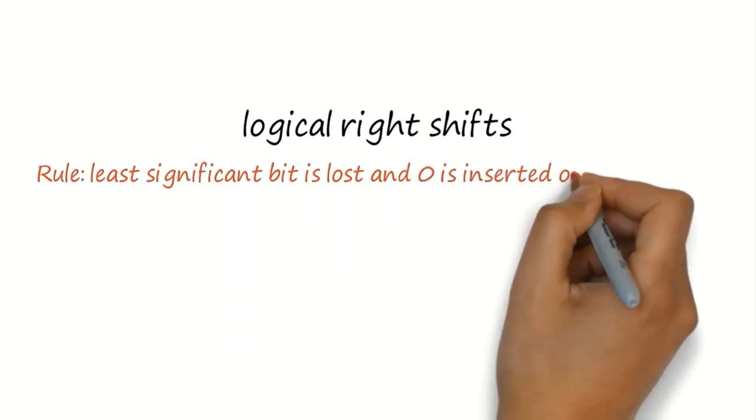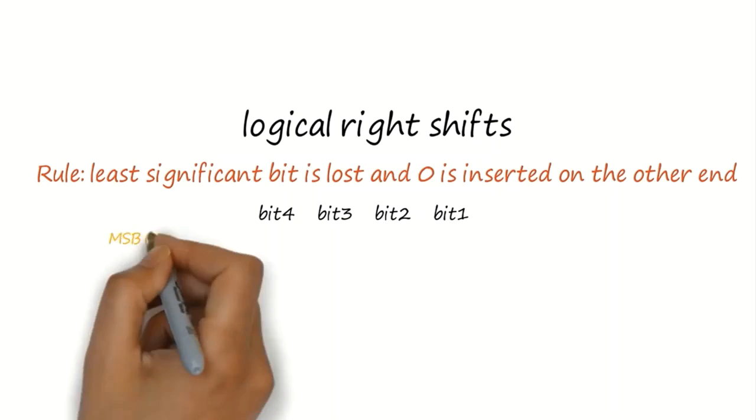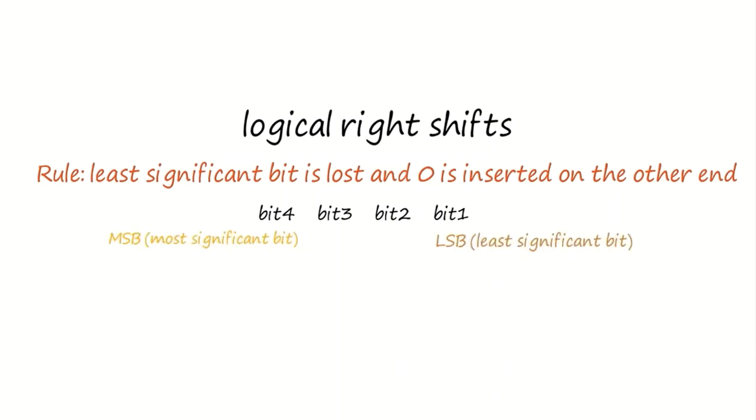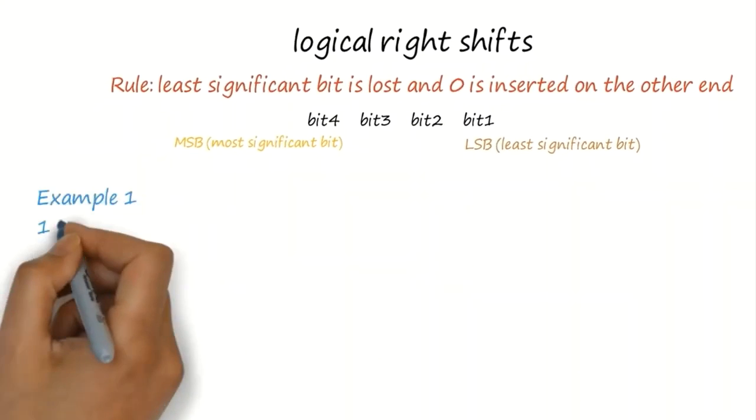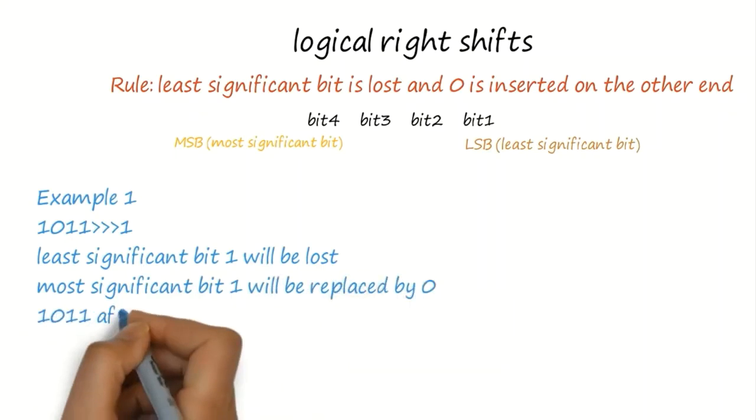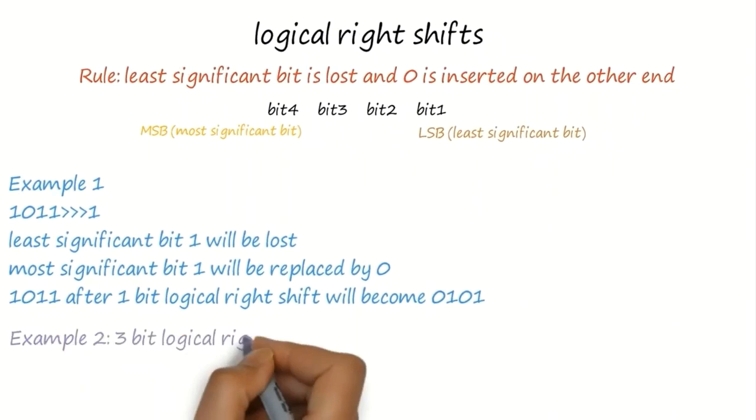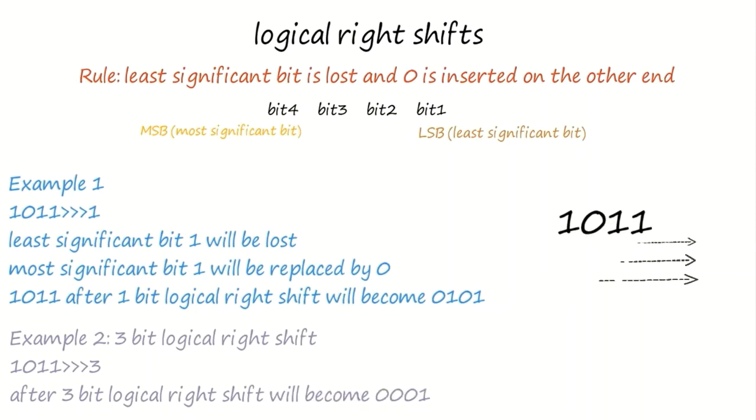When logical right shift occurs, the least significant bit is lost and a 0 is inserted on the other end. To perform 1 bit right shift on 1011, the LSB will be lost and the MSB 1 will be replaced by 0 and it will become 0101. It will be clear when we perform 3 bit right shift on the same, where last 3 bits will be lost and MSB comes at extreme right and 3 zeros will be appended at left.